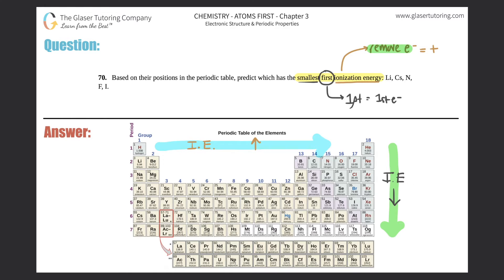Now let's see where these atoms are. We have lithium over here, cesium down here, nitrogen over here, fluorine, and then iodine. We want to know which one has the smallest.